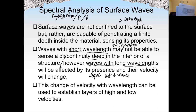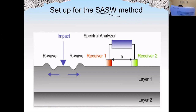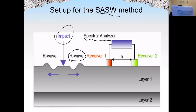The change of velocity with wavelength can also be used to check the layers and thickness of structures. We call this method Spectral Analysis of Surface Waves, or SASW. In this method we impact the surface of concrete and analyze the Rayleigh wave using a spectral analyzer. We have two receivers — receiver one and receiver two — with a well-controlled distance between them.